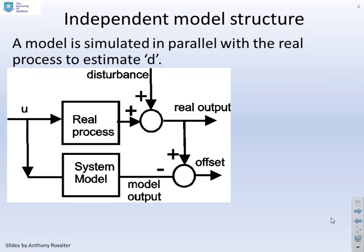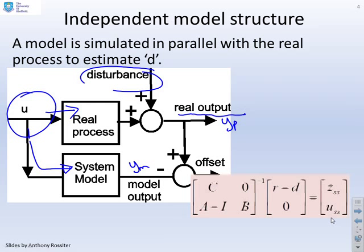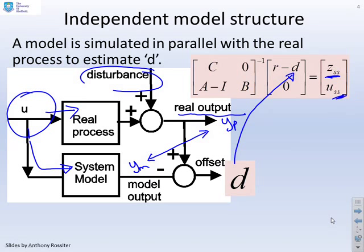How does this independent model structure look? You may recall this from the earlier chapters. In essence, we have an input which goes both into the process and into our model, so they are run in parallel. The actual process is subject to a disturbance which we don't know, and you end up with a real output — that's what we've been calling yp. The model output is called ym, and there's no disturbance there because we're going to estimate that disturbance as the distance between these two signals.